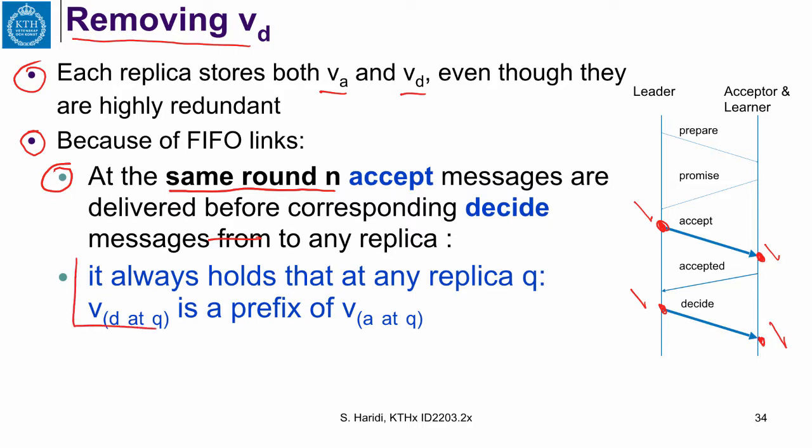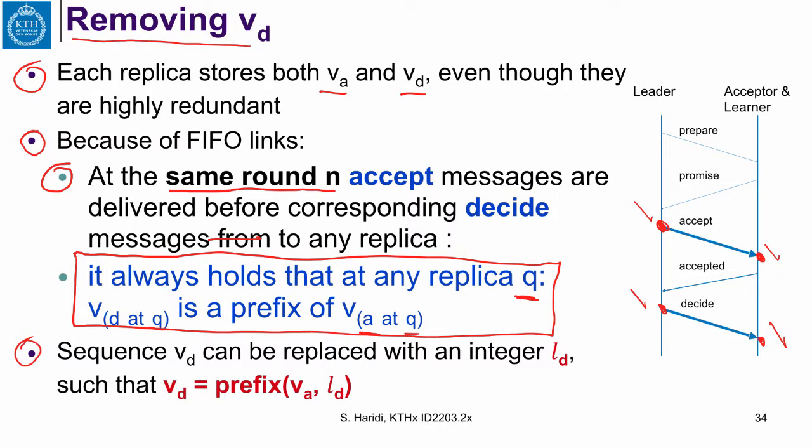These messages are sent in the same order from the leader. So it will be delivered at the destination, which is the acceptor and learner at the same order. Given that, we have the following invariant. In fact, it always holds that for any replica Q, the decided sequence at Q is a prefix of the accepted sequence at Q, because you get the accepted sequence first. First, you send accept acknowledged to the leader, and then you get later the decided sequence. The sequence now, the decided sequence can now be replaced by just an integer, LD.